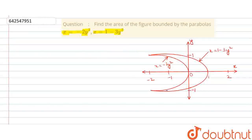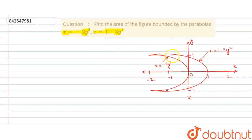I have drawn the parabolas here with the coordinate axis and labeled them. You can see that this is x equals 1 minus 3y squared and x equals 2y squared. We have to find the area of the figure bounded, and from the diagram we can see that this region is the area bounded by the parabolas.